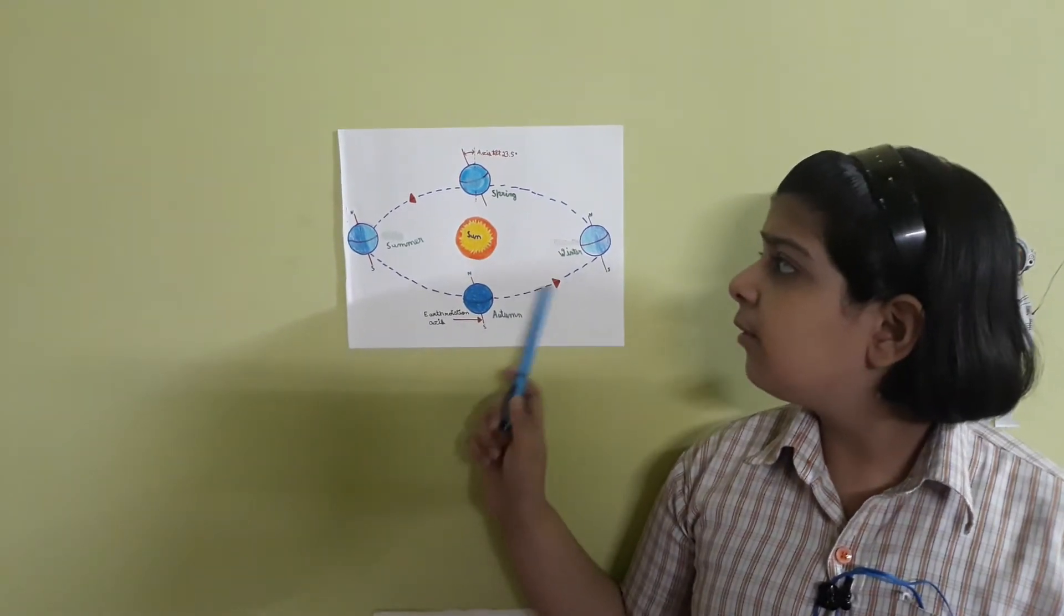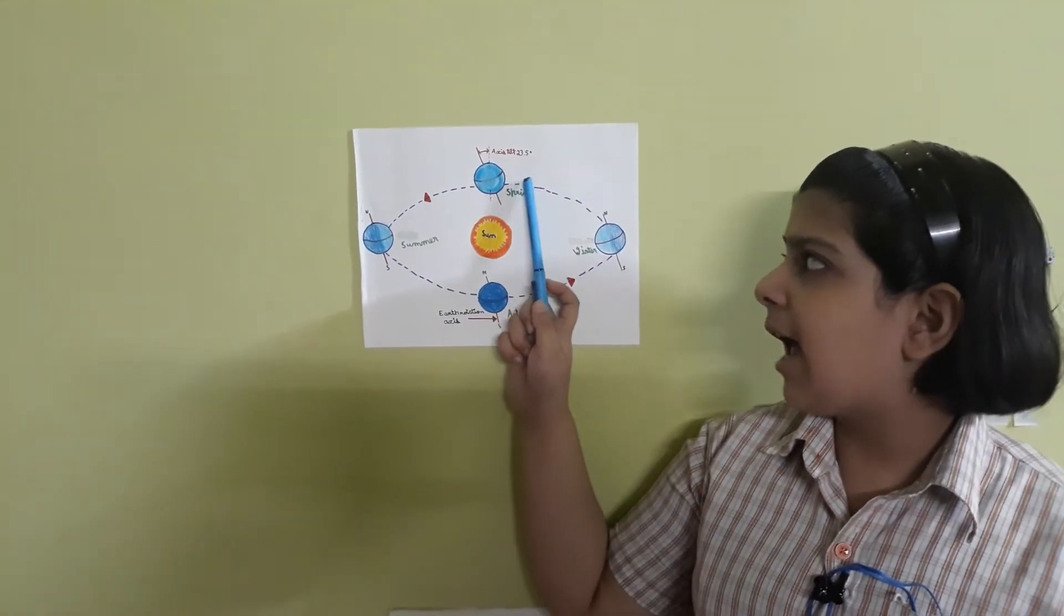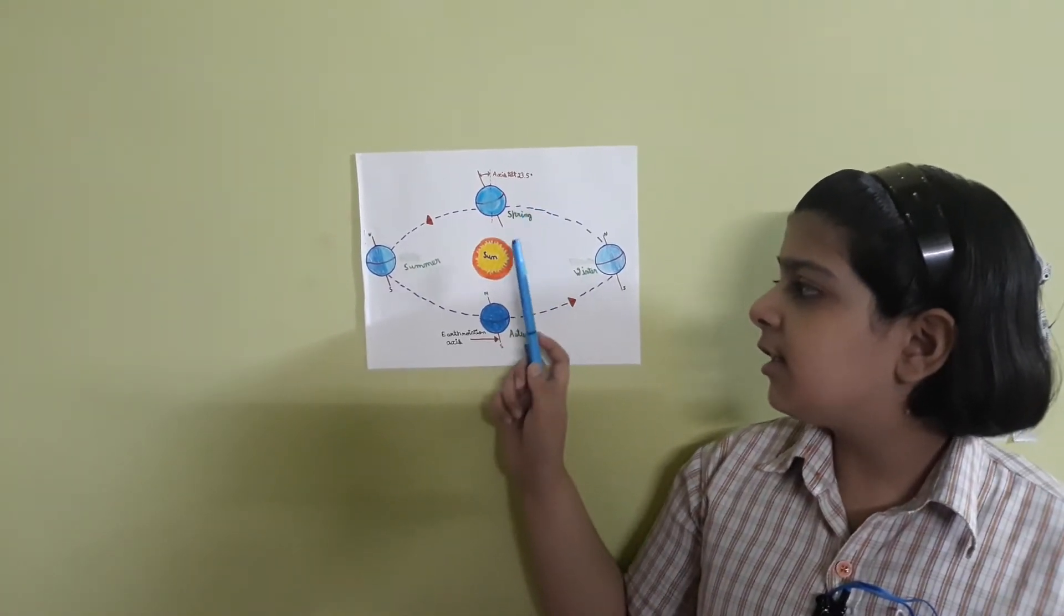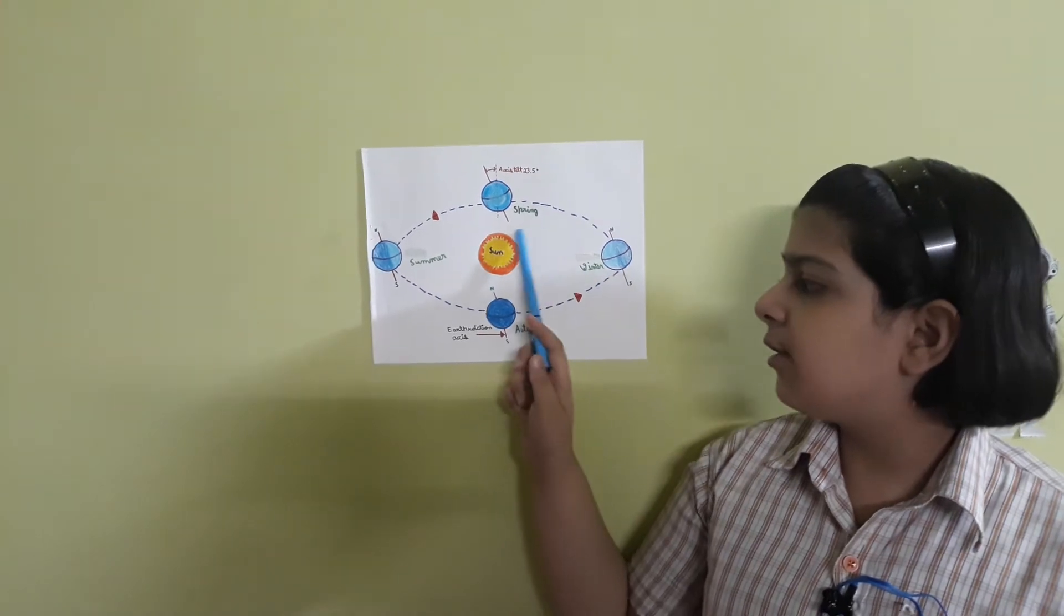The revolution of the earth and the tilt in the earth's axis, which is 23.5 degrees, causes changes of seasons during a year.